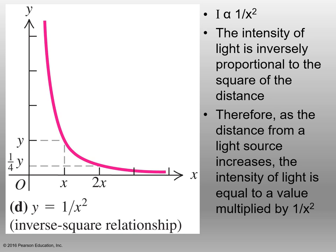Finally, we look at an inverse square relationship. I is proportional to 1 over x squared, where I stands for the intensity of light. It's inversely proportional to the square of the distance. As the distance from a light source increases, intensity equals a value multiplied by 1 over x squared. For example, driving at night and passing a street light — as your distance increases, the intensity of that street light is reduced by an inverse square relationship.